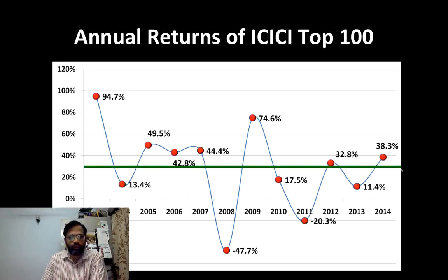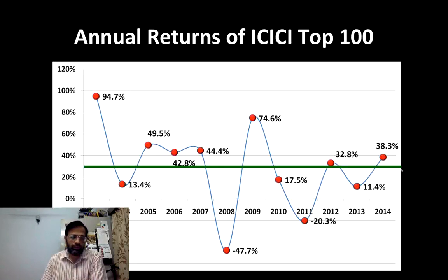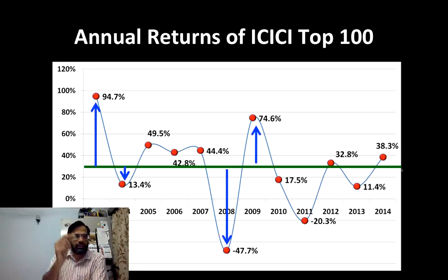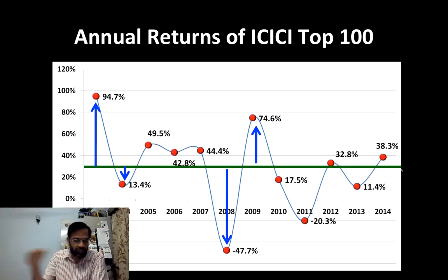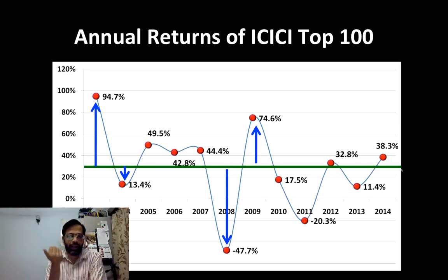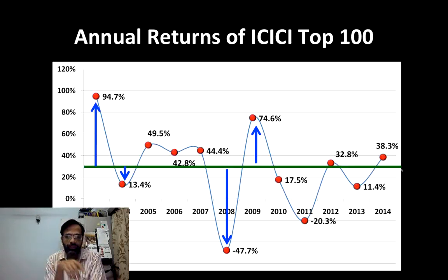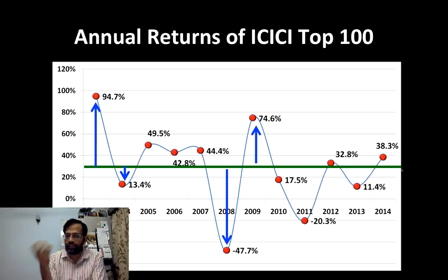Suppose I find out how much does each return deviate from the average — that's the blue line. How much does each return deviate from the average, that's the green line. If I find that out and calculate the average of all those deviations, that's called the standard deviation or the volatility.